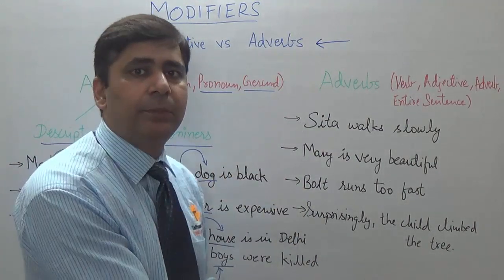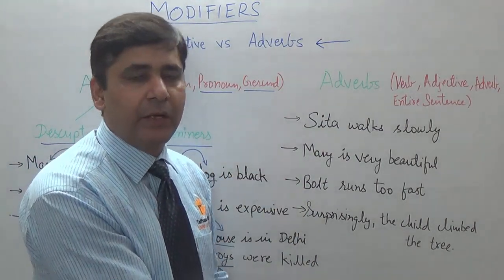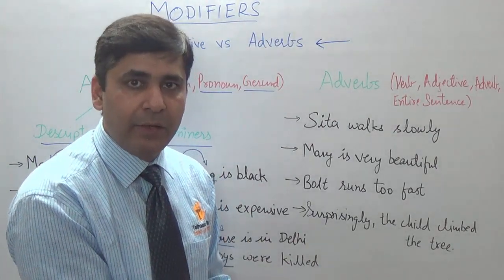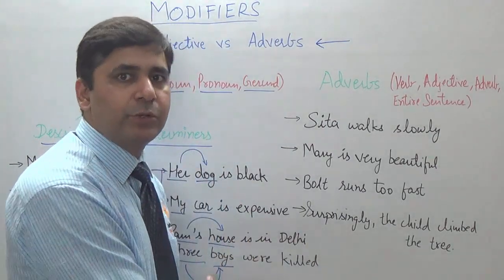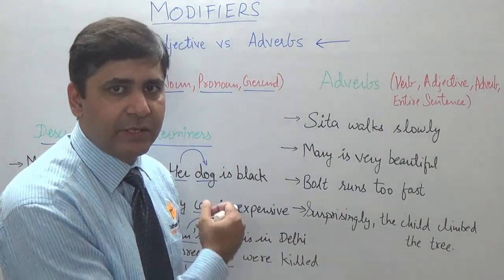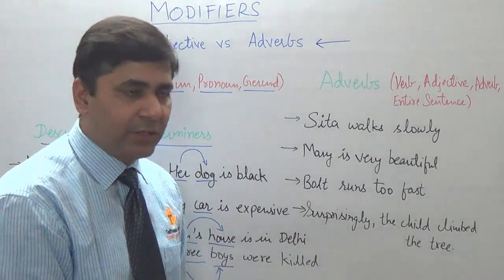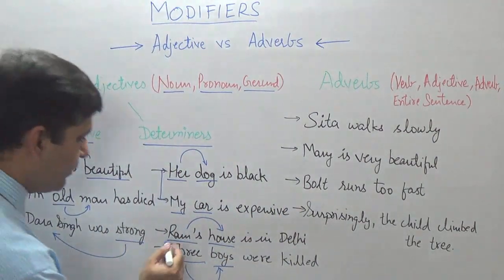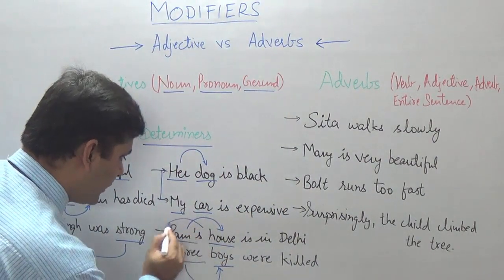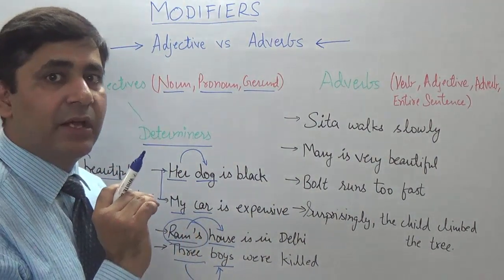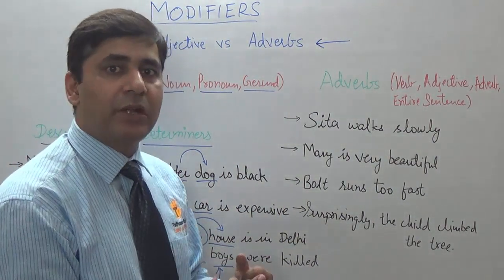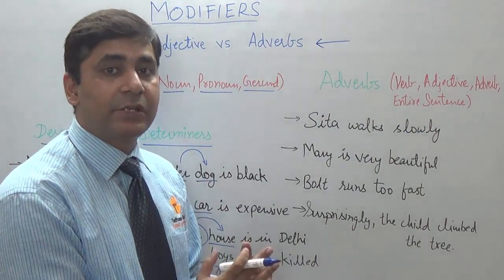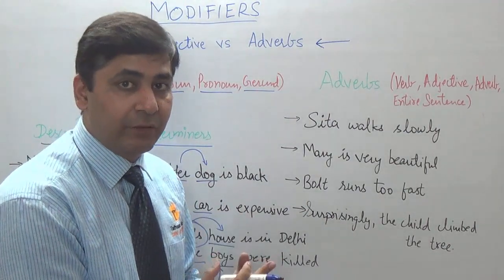There is another determiner known as identity determiner, but we are not going to speak about it here because it is not much tested. The most important thing to remember is that apostrophe-s does not mean the word is a noun — it is going to be a possessive adjective.